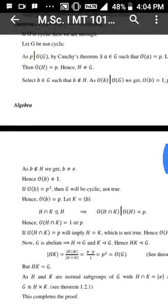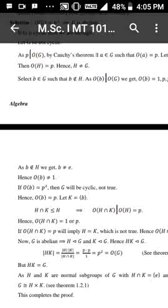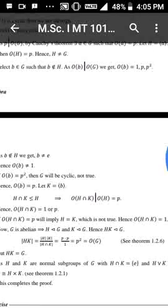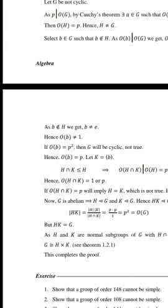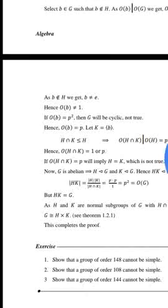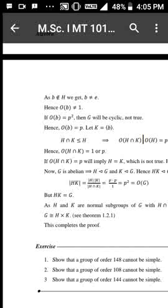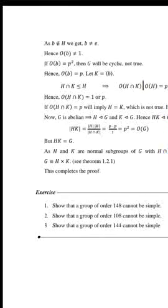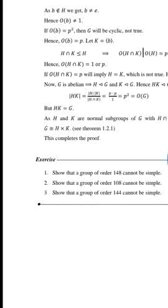We select B belonging to G such that B does not belong to H. Since the order of B divides the order of G, we get the order of B equals 1, P, or P². Since B does not belong to H, B is not equal to E. Hence the order of B is not 1. If the order of B equals P², then G would be cyclic, which is not true. Hence the order of B equals P. Let K equal the cyclic group generated by B.